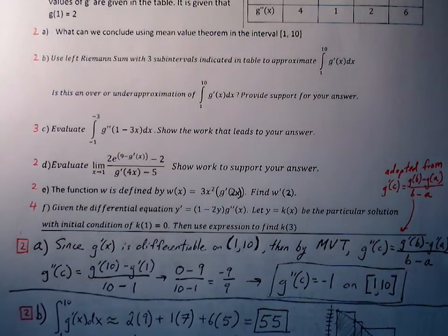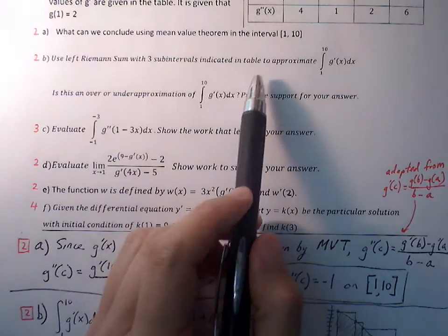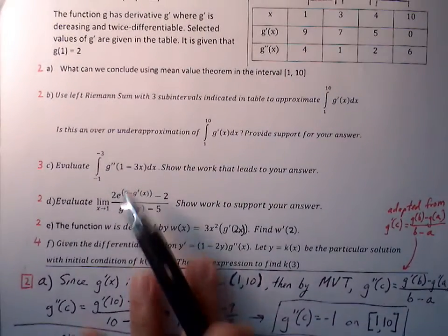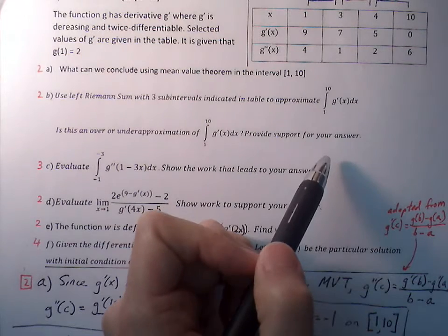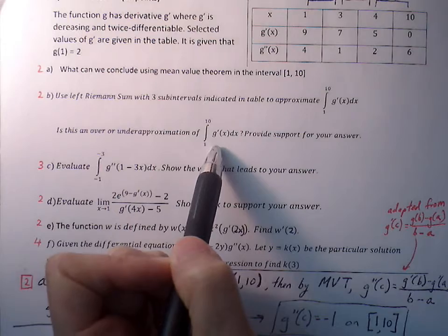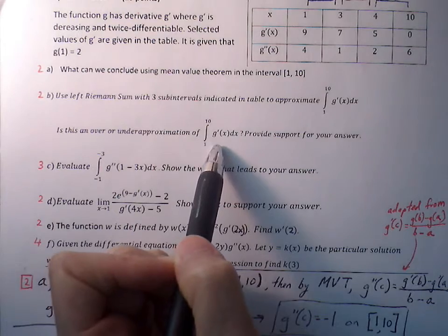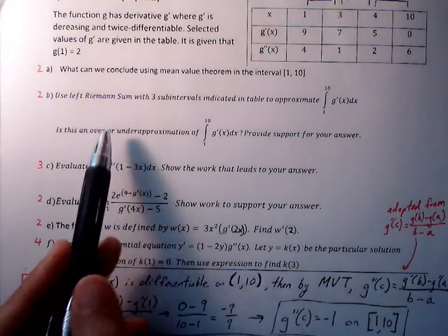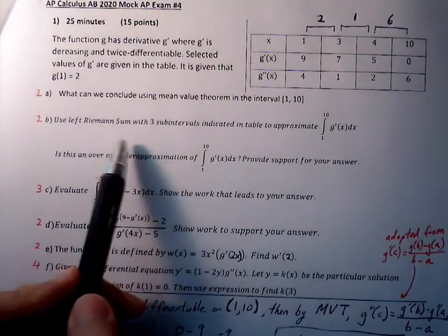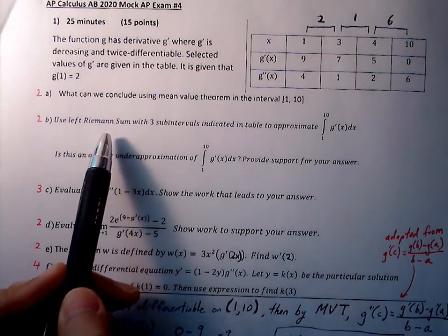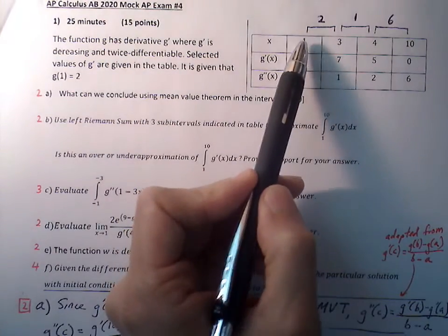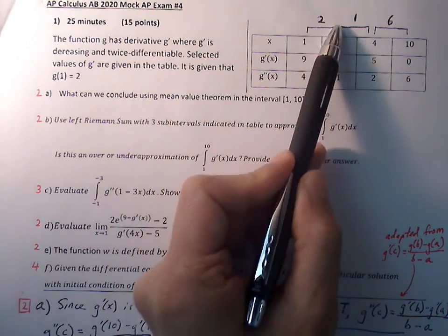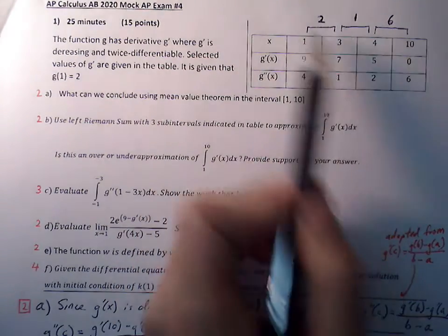Part B: use a left Riemann sum with three subintervals indicated in the table to approximate the definite integral of G prime from one to ten. Riemann sums means we're adding areas of rectangles. We have three subintervals from one to ten — first subinterval, second subinterval, third subinterval.